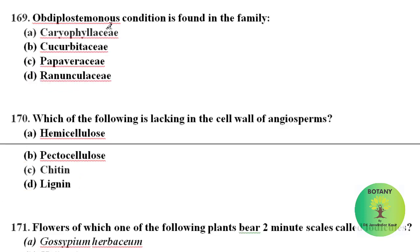Obdiplostemony condition is found in family Caryophyllaceae. In obdiplostemony, stamens are present in two whorls — the outer whorl is opposite to the petals, and the inner whorl alternates with the outer whorl. This type of condition is present in family Caryophyllaceae.